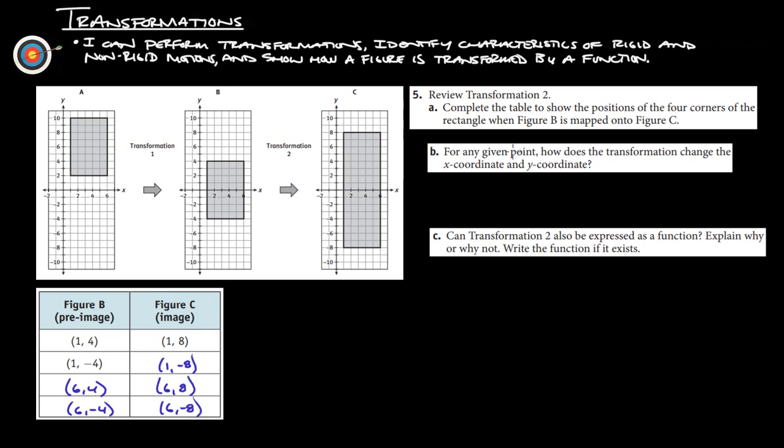For any given point, how does the transformation change the x-coordinate and the y-coordinate? So, again, here, the x-coordinate has stayed the same. But now, the y-coordinate, you'll notice from here to here, it's twice as high here. And it's twice as low here. So, the y-coordinate is being doubled. 4 times 2 is 8. Negative 4 times 2 is negative 8. 4 times 2 is 8. Negative 4 times 2 is negative 8.